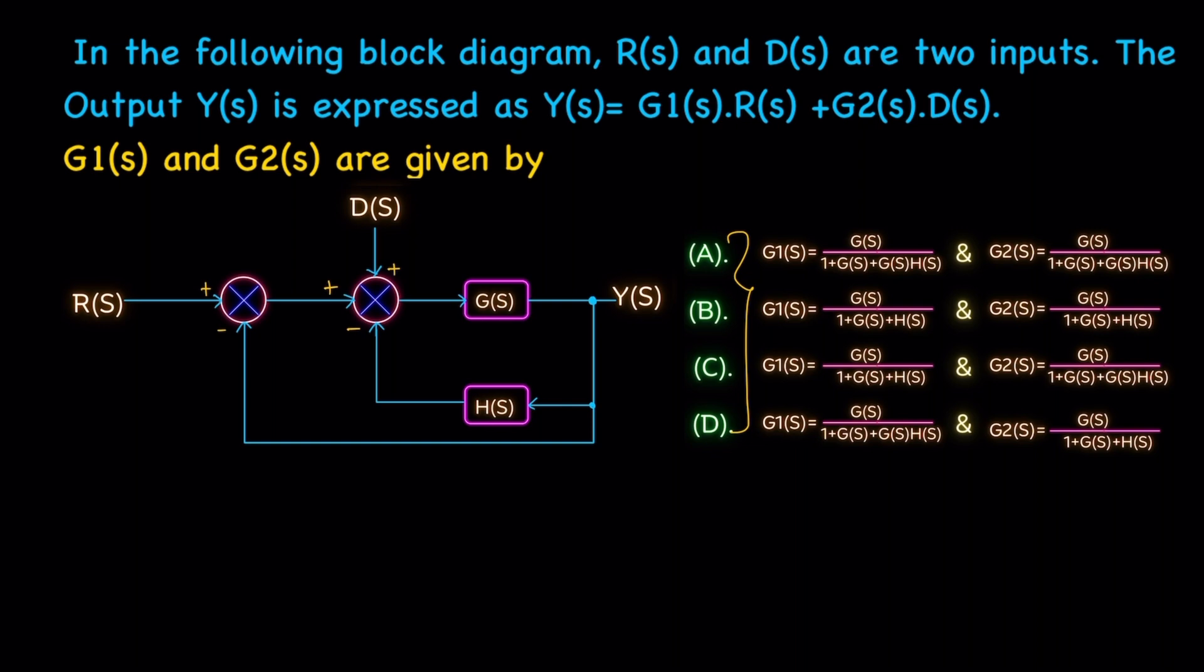From the diagram, there are two inputs and one output. The same types of questions in semester exams, we can use superposition theorem to find the final result. For example, we assume D equals zero, we can find Y divided by R. Then next, R equals zero, we can find Y divided by D, then we combine them.